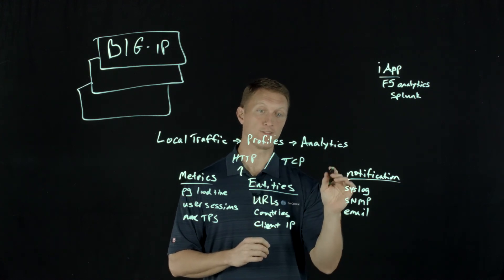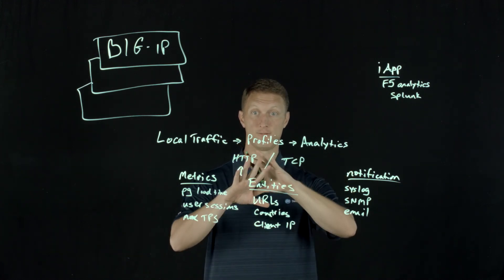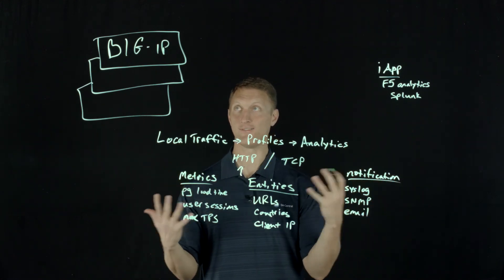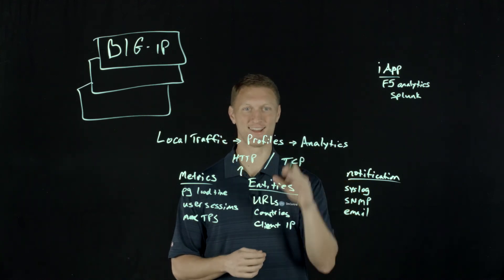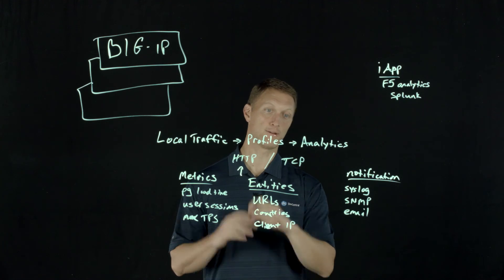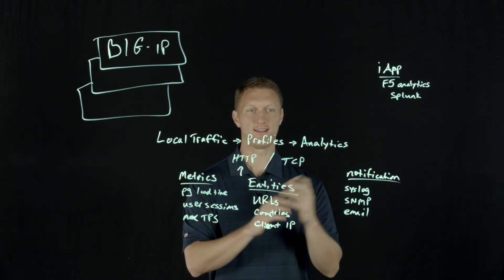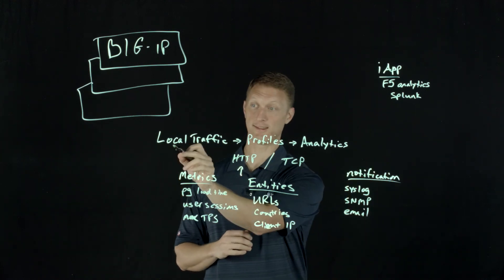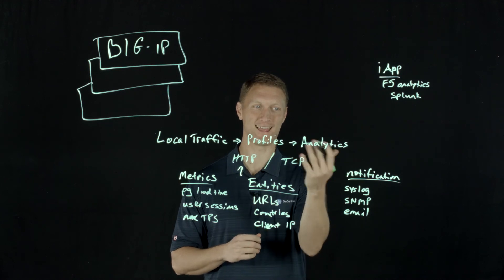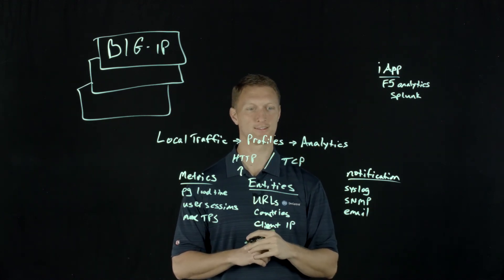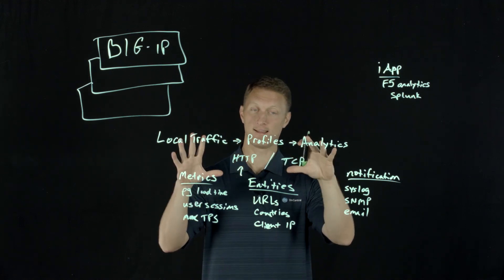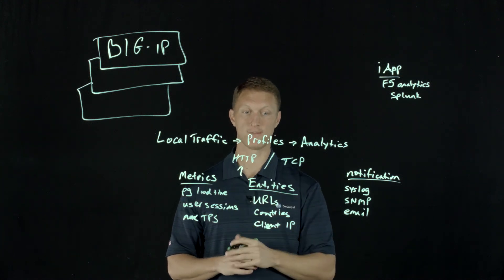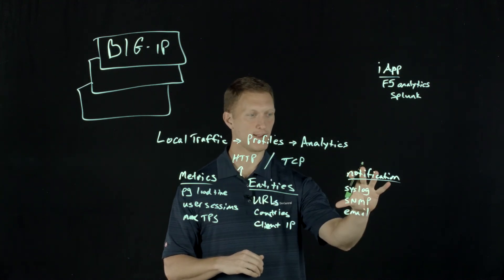One other thing to mention before you can do any of this: you do have to go in and resource provision AVR on your Big IP first. So make sure you go into resource provisioning and provision AVR, and then all this stuff will pop up and be available. If you're in your Local Traffic menu and you don't see the analytics options, it's probably because AVR isn't provisioned yet.